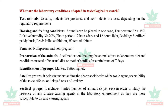Test animals, usually rodents, are preferred and non-rodents are used depending on regulatory requirements. Housing and feeding conditions: animals should be placed in one cage. Temperature should be between 22 ± 3 degrees centigrade, relative humidity of 30 to 70 percent, and light-dark cycle should be 12 hours. Bedding should be sterilized paddy husk, feed should be pellet feed ad libitum, and water is essential. The females should be nulliparous and non-pregnant.